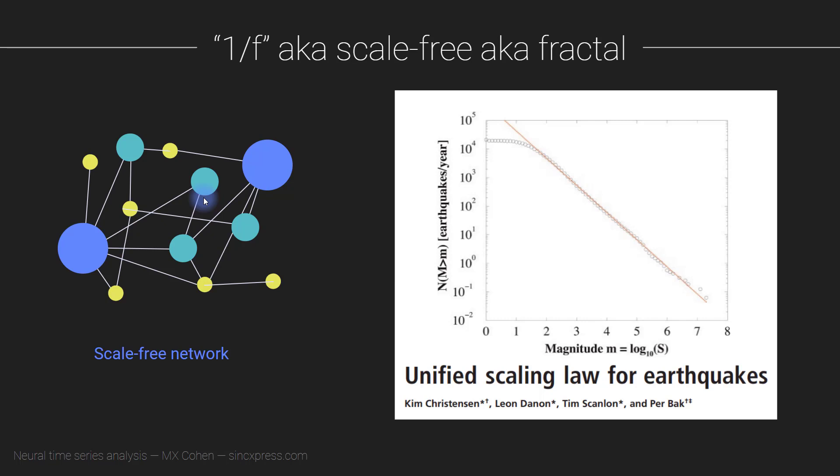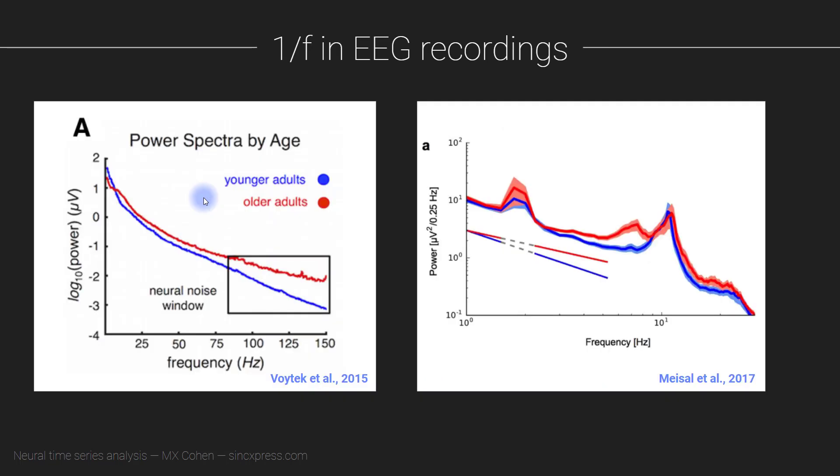In this video, I'm not really going to say much more about the theory of scale-free dynamics. Instead, I want to focus more on the analysis method of DFA, detrended fluctuation analysis. However, I do want to highlight just two findings out of many. There are many, many studies on temporal dynamics and 1 over F characteristics in brain activity.